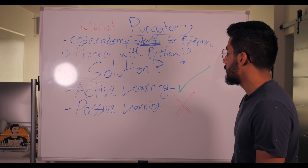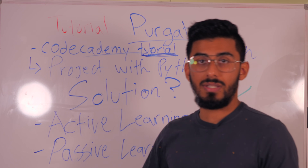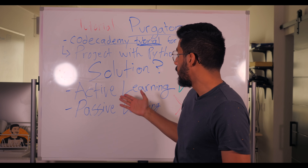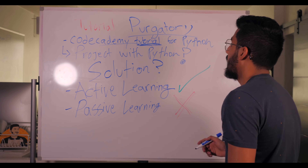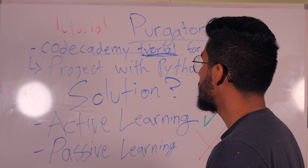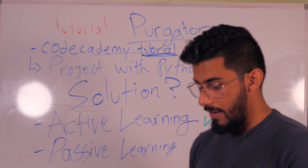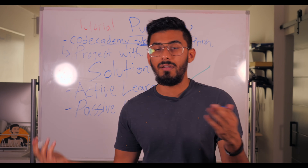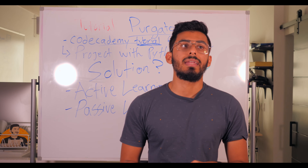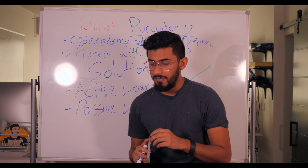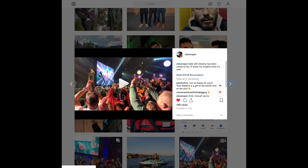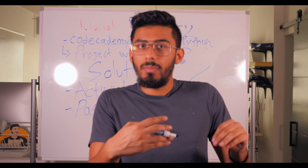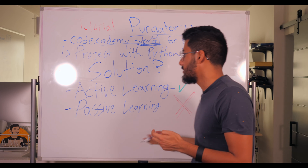Let me talk about what passive learning looks like versus active learning. Passive learning is just going through the motions, copying the code, practicing it in isolation. Active learning looks different. Let's say I have a project in mind — I want to create some kind of app, like an Instagram clone. If people are making posts and putting up pictures, that data needs to be saved somewhere so it persists every time I run my code.